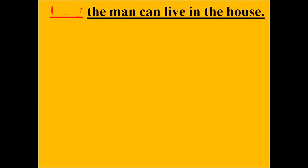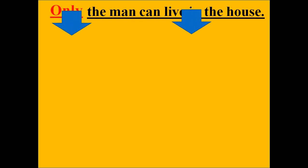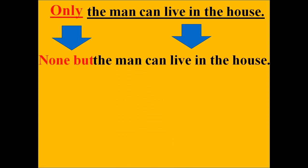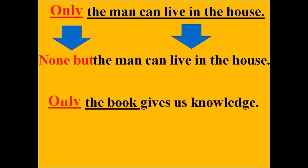Students, look here. Sentence one: Only the man can live in the house. Here the word 'only' is used. How can we change it to negative? We change it by using 'none but' in place of 'only.' The subject here is 'the man,' and man is a person, so we must use 'none but' for 'only.' The rest of the sentence remains accurate.